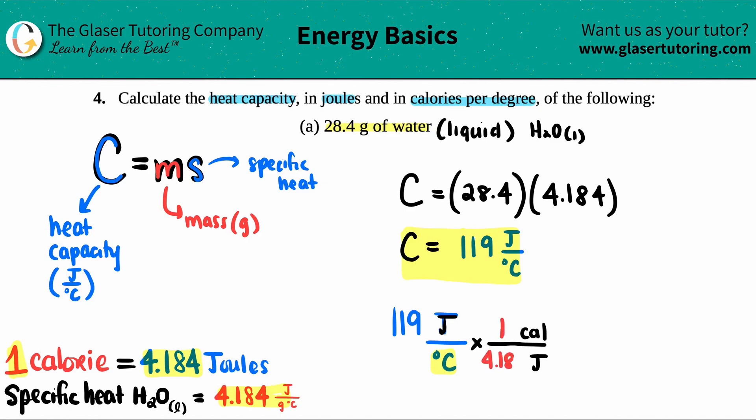4.184 joules goes on the bottom and the joules cancel out. Now you have your new number. So 119 divided by 4.184.